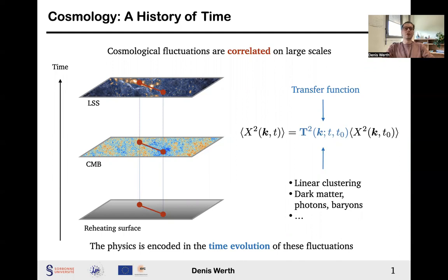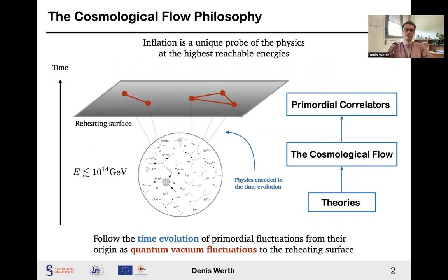To give a simple example, at the linear level, the two-point correlation function of some fluctuation, denoted x in Fourier space, is transported from sometime t0 to t via the so-called transfer function, that encodes all the relevant physics, linear clustering, etc. More impressively, under relatively mild assumptions, all these correlators can be traced back to the reheating surface, that is the beginning of the hot Big Bang cosmology.